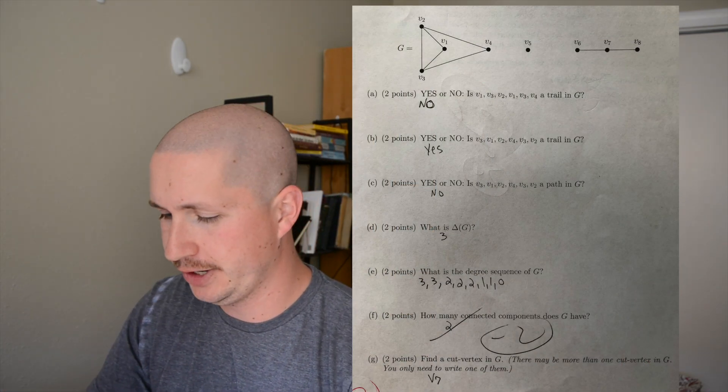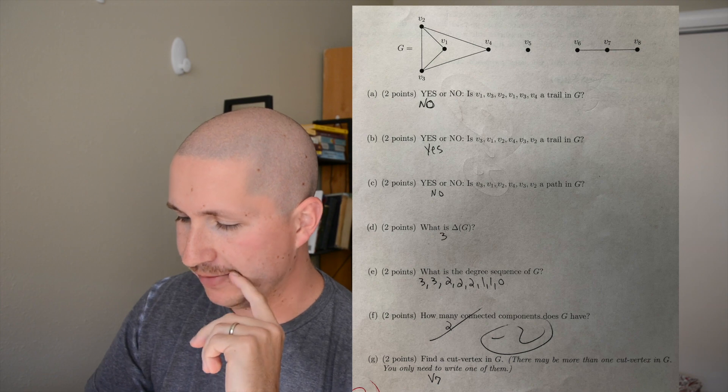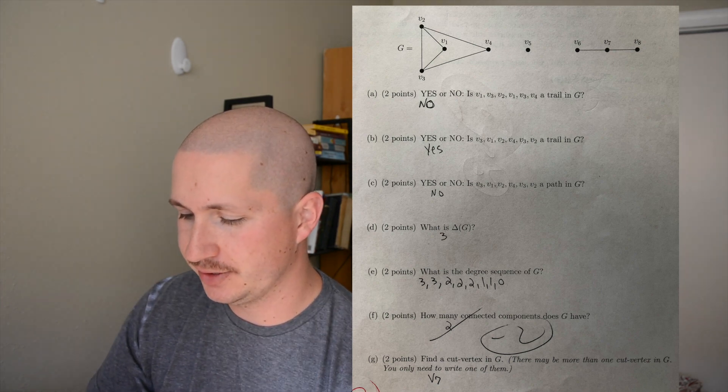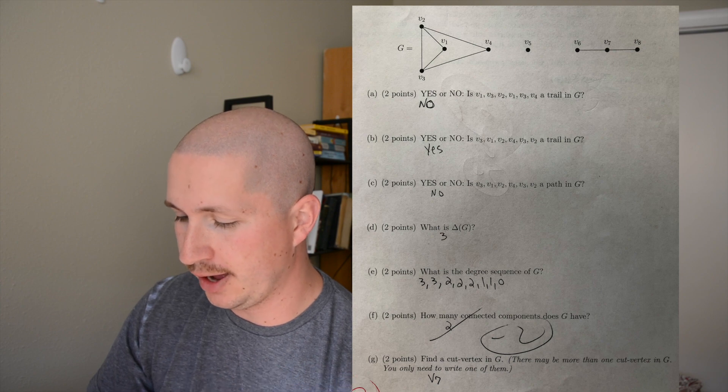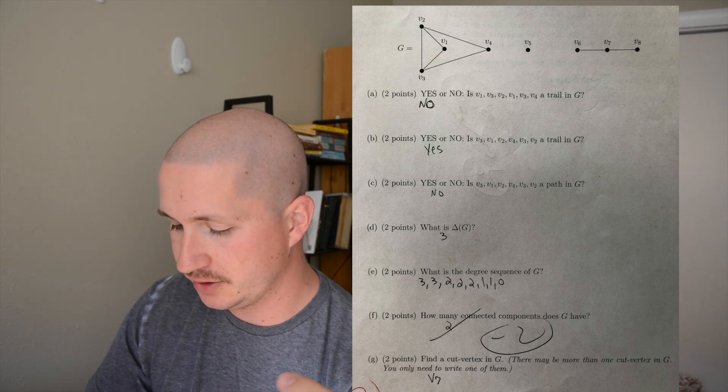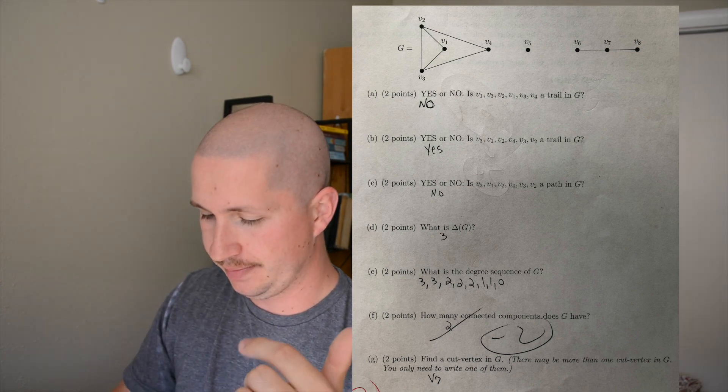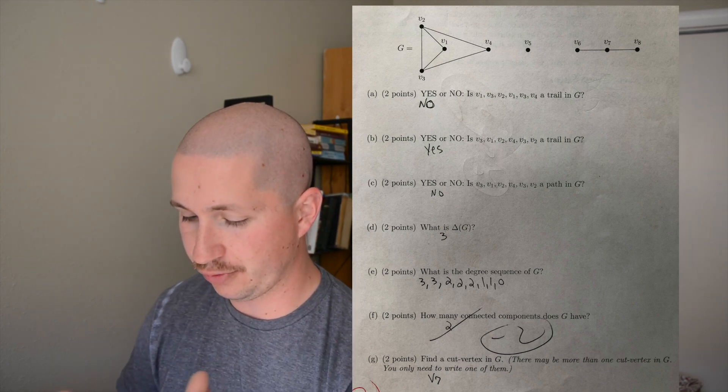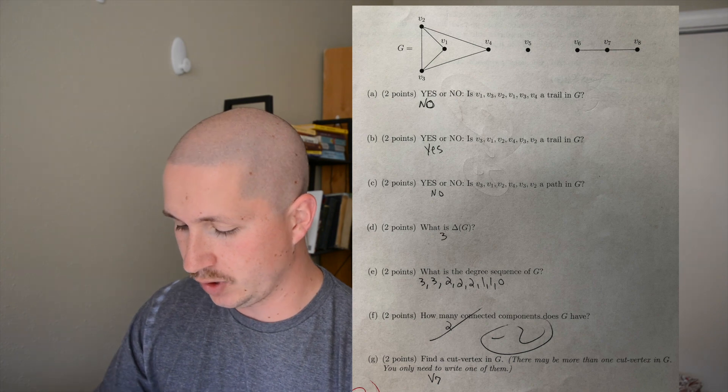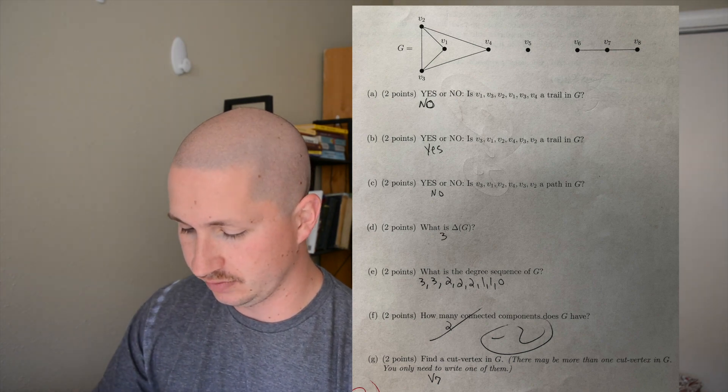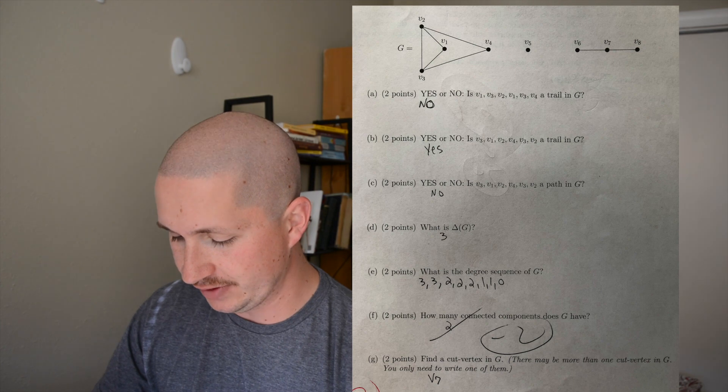So let's just jump into it. Page one, I'm gonna throw all these up on the screen. Consider the following graph. We're determining whether or not vertex sequences are trails, paths - that consists of the first three problems. That's just an application of the definition of a trail.